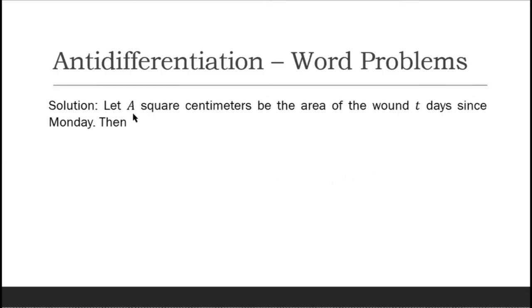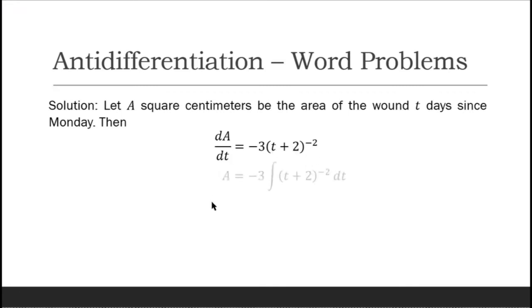Let A square centimeters be the area of the wound t days since Monday. Then dA/dt = -3(t + 2)⁻². The anti-differentiation of the given derivative gives us: -3 is a constant, so we can place it as a coefficient of the integration sign, giving us the integration of (t + 2)⁻² dt.